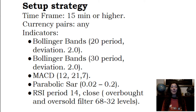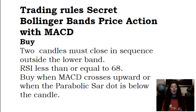Parabolic SAR 0.02 to 0.2. RSI 14, close overbought and oversold filter at 68 and 32 levels. Trading Rules: Bollinger Bands Price Action with MACD.